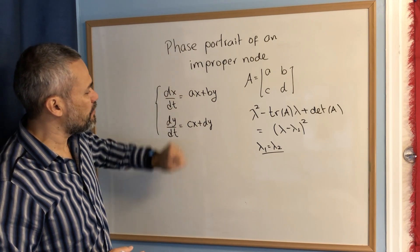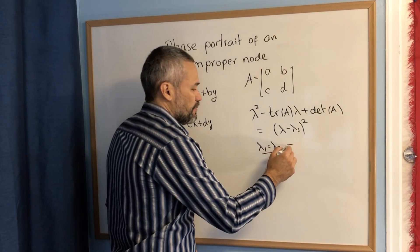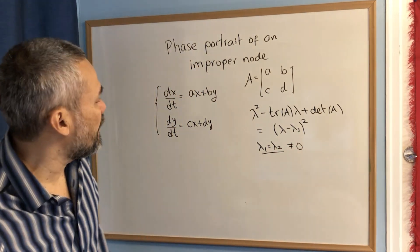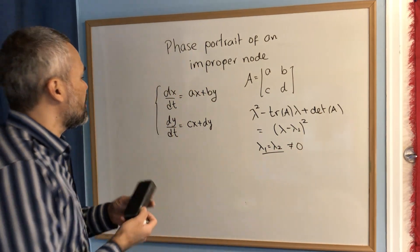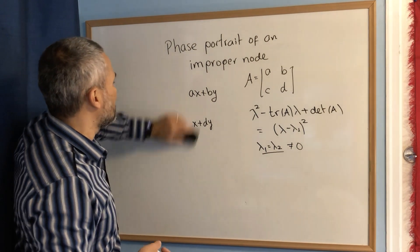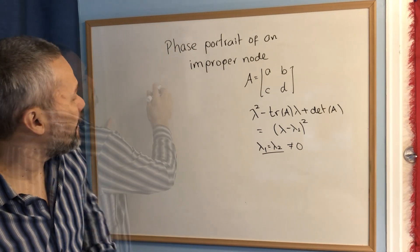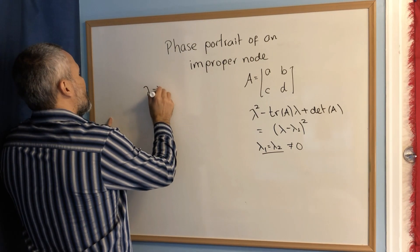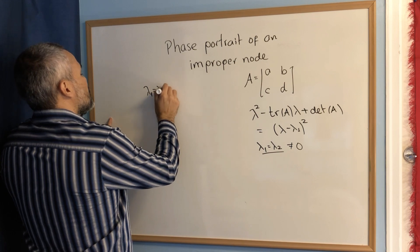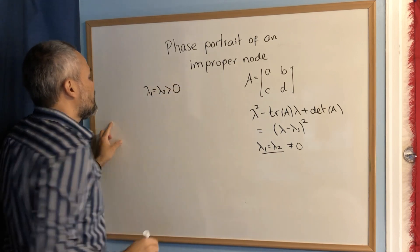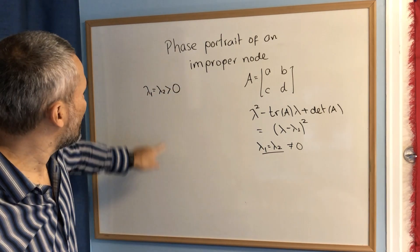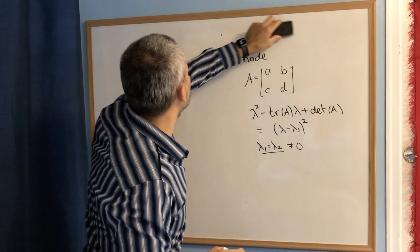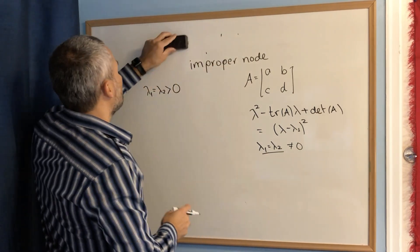We are going to assume that λ₁ is different from zero. We have two cases. In the first case, suppose that λ₁ = λ₂ is greater than zero. In this case we call it an unstable improper node.